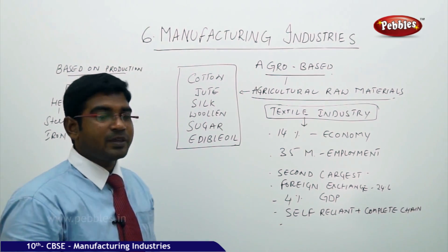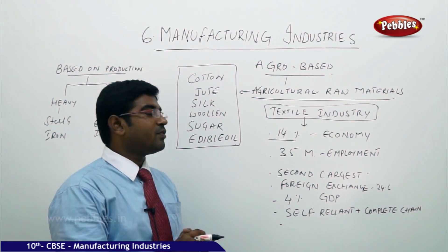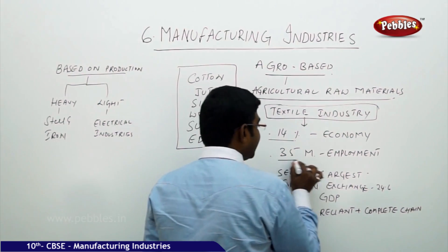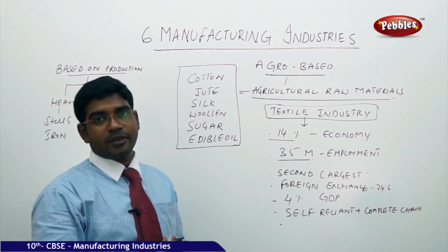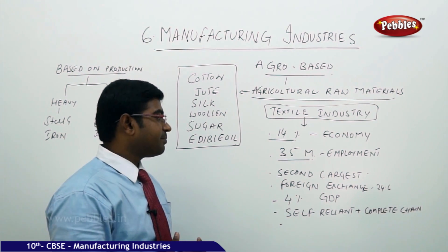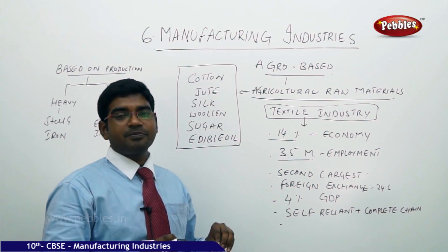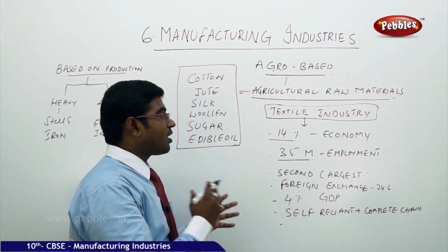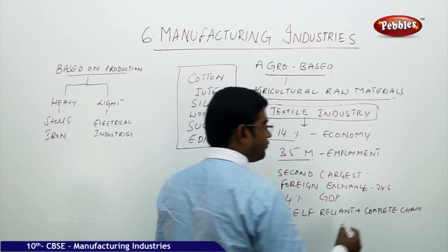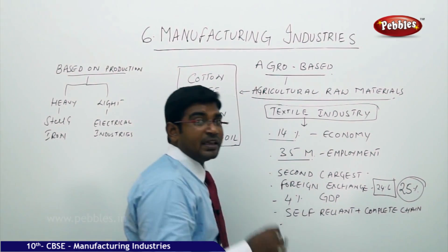The production of the textile industry has been consistently growing up to 14 percent of industrial production. Nearly 35 million people are employed directly in this industry. This makes it the second largest industry after agriculture in terms of employment. Regarding foreign exchange, India derives nearly 24.6 percent — almost 25 percent — of its total foreign exchange from the textile industry.